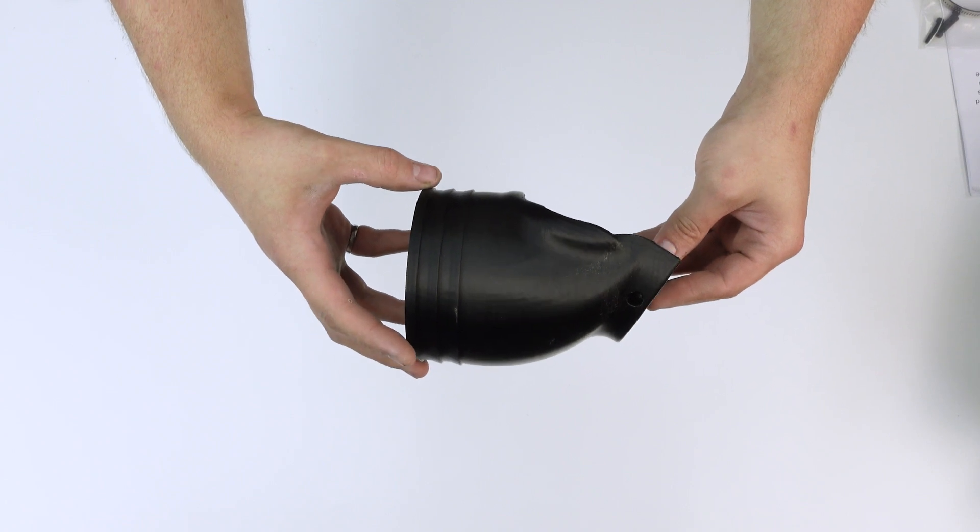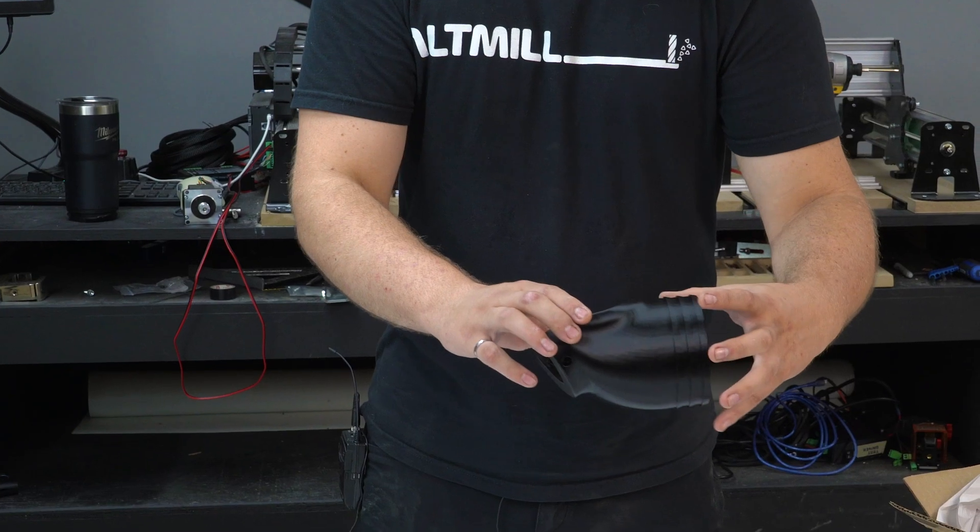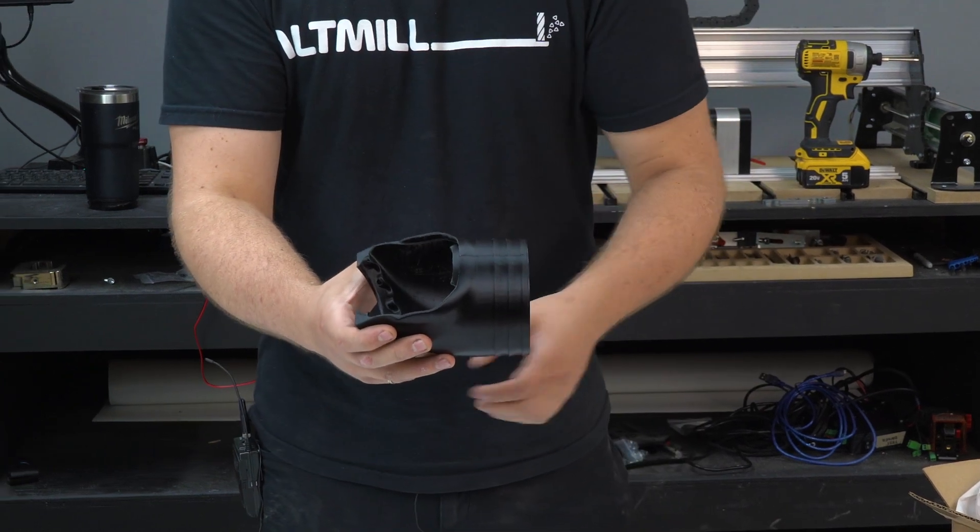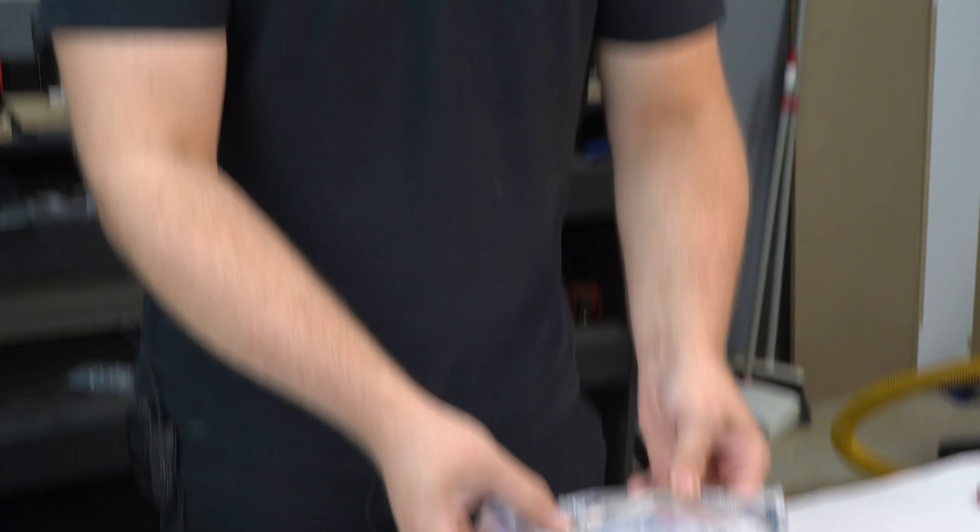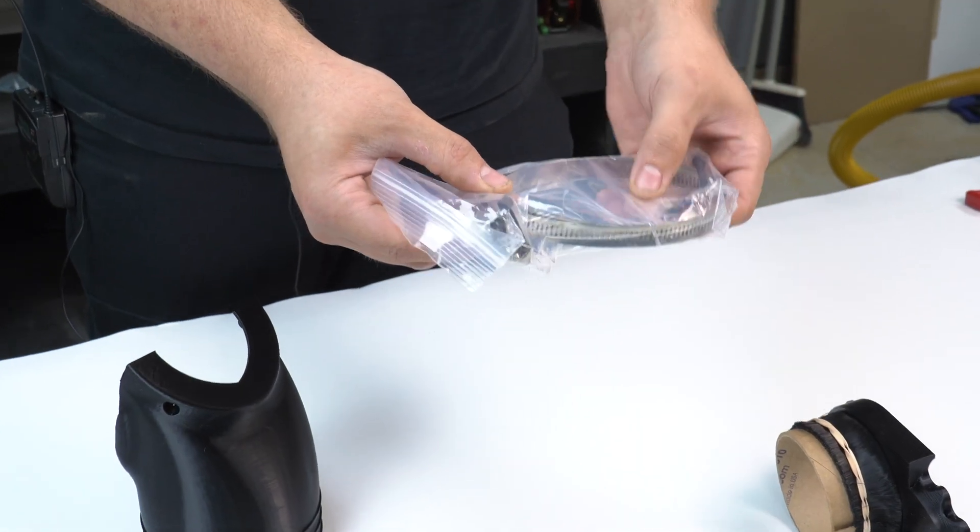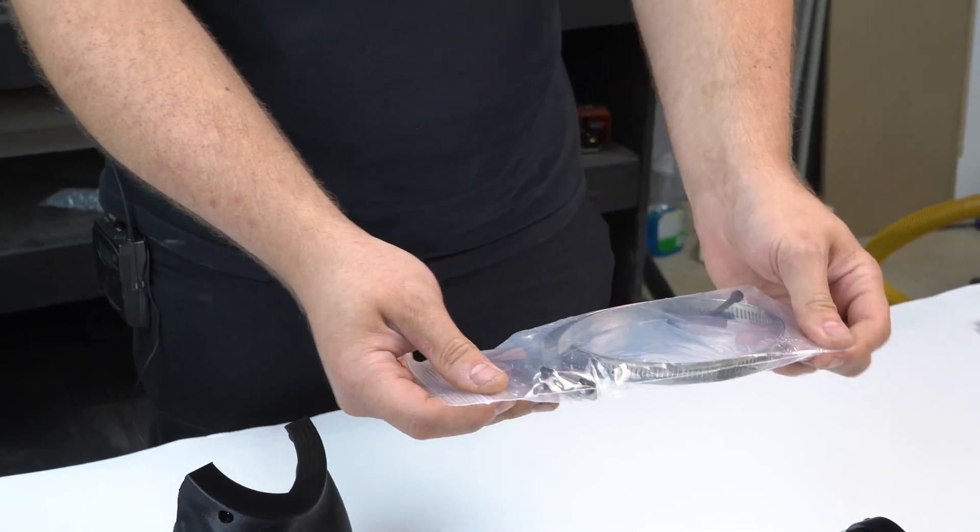First we have the hose body. This will attach to your standard 4 inch dust collection hose. If you need to adapt this you can go to your local hardware store and get an adapter should you need it. You'll find the hardware for that: two hose clamps as well as four M4 screws in order to assemble it. We give you two extra in case you lose them.